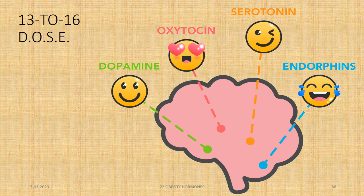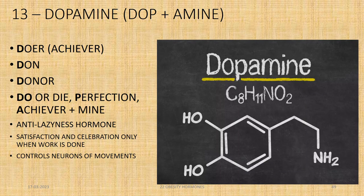Four important hormones related to mental health and mood are dopamine, oxytocin, serotonin, and endorphins — shortly known as DOSE hormones. Dopamine, derived from dope plus amine, makes us doers and achievers. It is an anti-laziness hormone. You get satisfaction only when work is completed, and it also controls the neurons of movement and facilitates movement of our body.